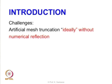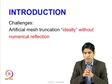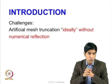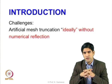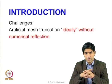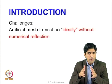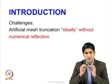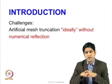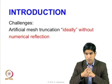One of the biggest challenges we face when we artificially truncate a domain is numerical reflection. We call it numerical reflection because it is an artificial reflection — there is no reflection in the physical problem itself, but we are trying to model it in finite space and time, and we are going to get reflections.